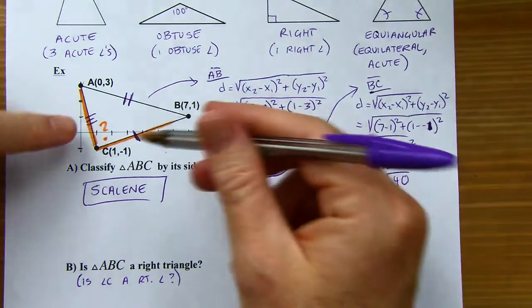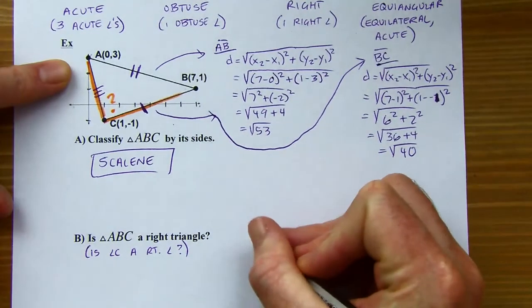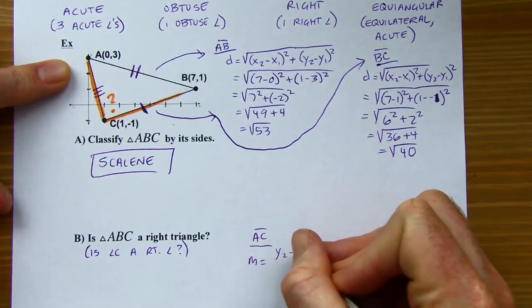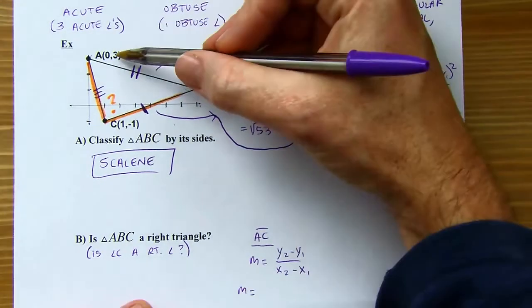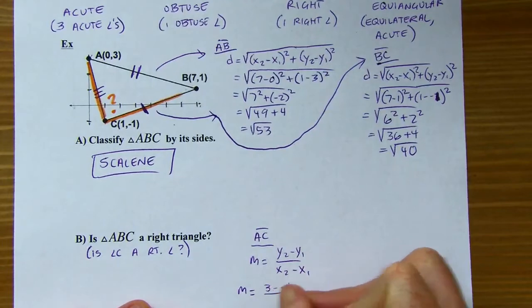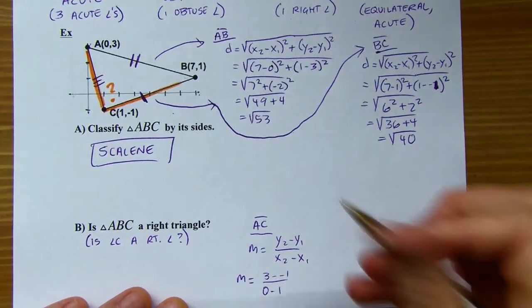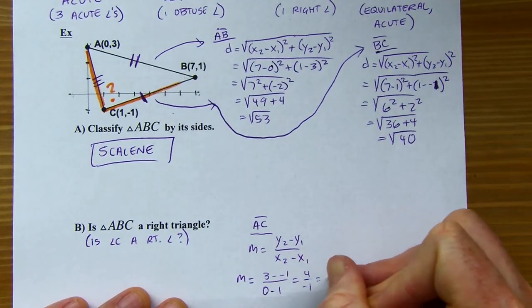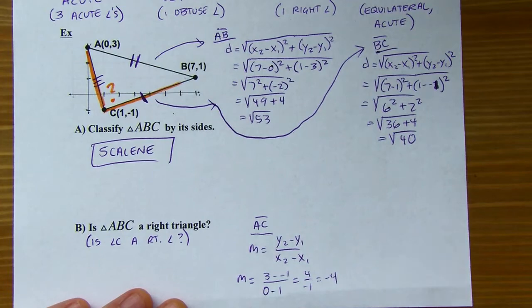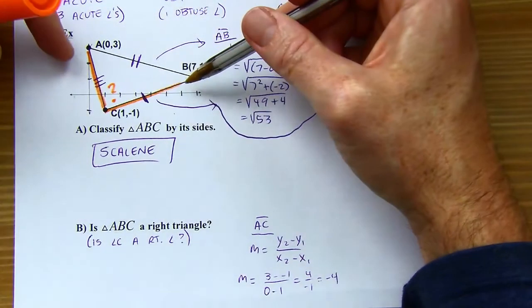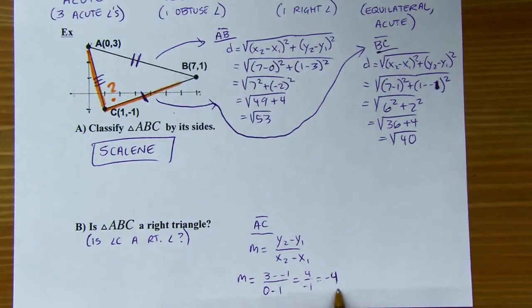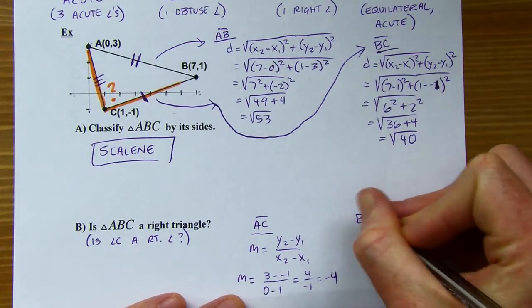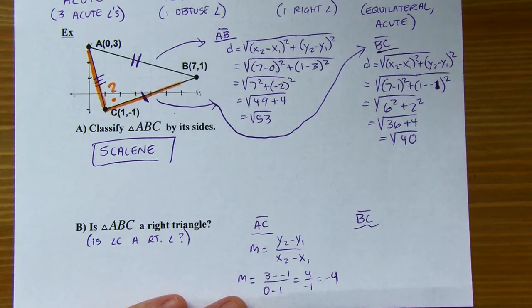I can test the slopes of both lines meeting at C. For line AC, using the slope formula — y's in the numerator, x's in the denominator — I'll do 3 minus negative 1 over 0 minus 1, which gives me 4 over negative 1, so the slope is negative 4. If the lines are perpendicular, the slopes are opposite reciprocals. The opposite reciprocal of negative 4 would be positive one-fourth. So if the slope of BC comes out to positive one-fourth, I have a right angle.